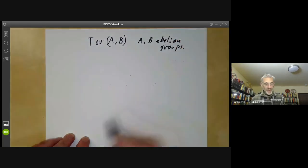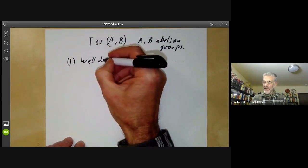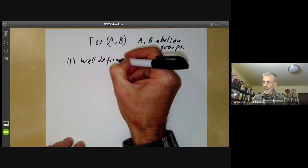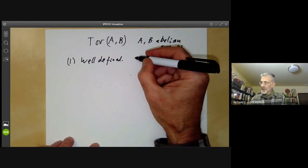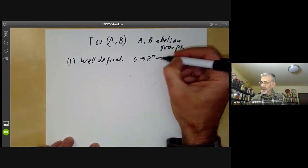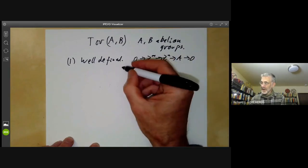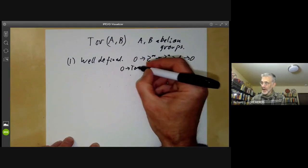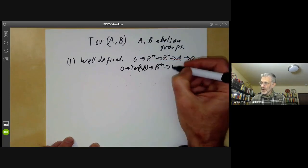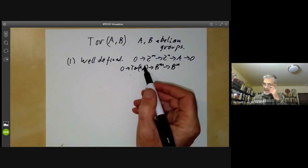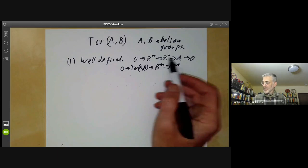The properties we want to cover are as follows. First, we need to check that Tor is well defined. In the previous lecture, we defined Tor(A, B) by choosing a resolution 0 → Z^M → Z^N → A → 0, and then tensoring this with B. So we get 0 → Tor(A,B) → B^M → B^N. It's not clear that this is independent of the choice of resolution of A.